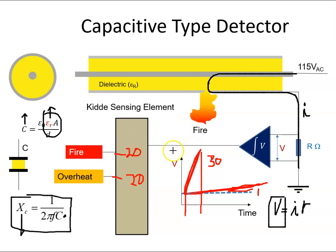So with this type of system, you can see how you can detect either a fire or an overheat, and it's all based on this current varying due to the relative permittivity of the sensor varying due to the heat. That's capacitive type detectors.